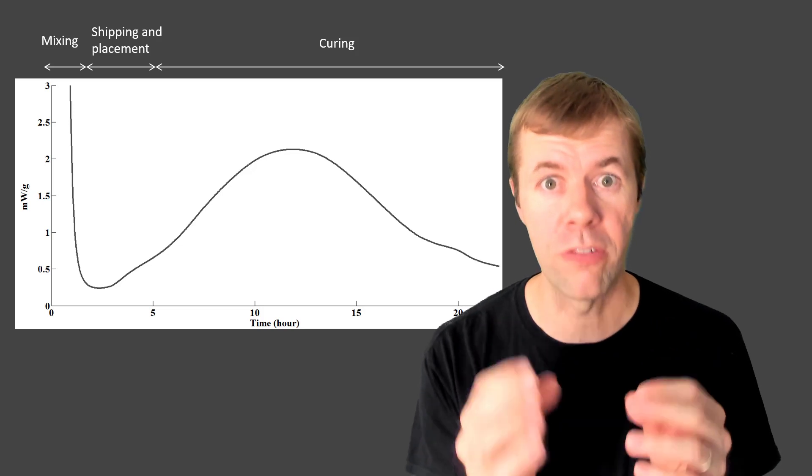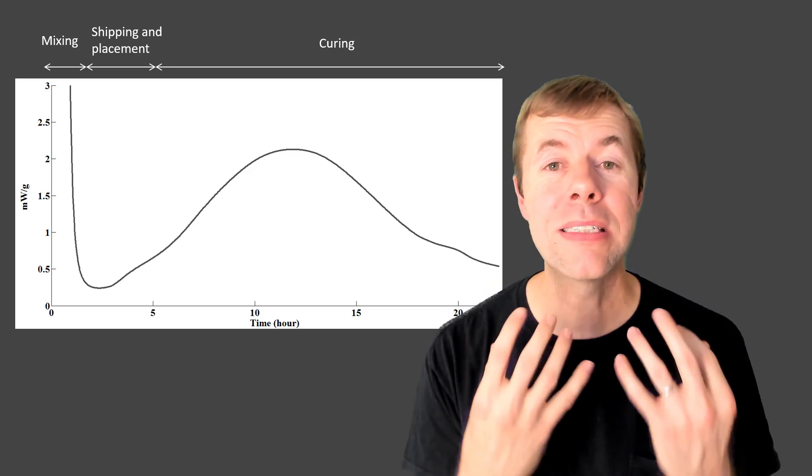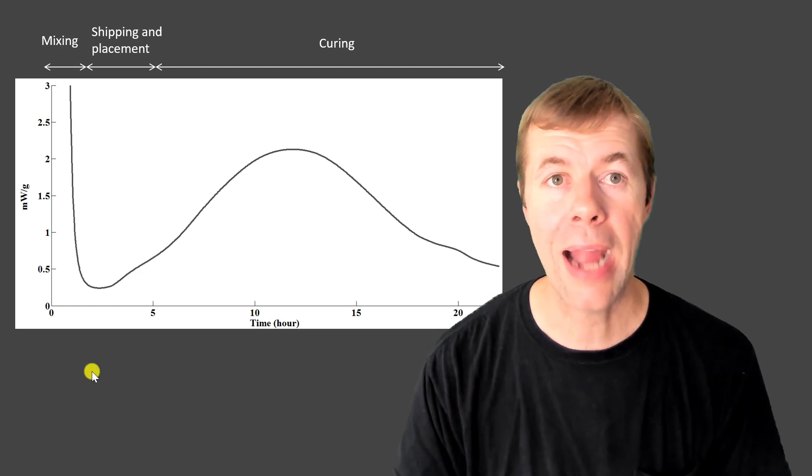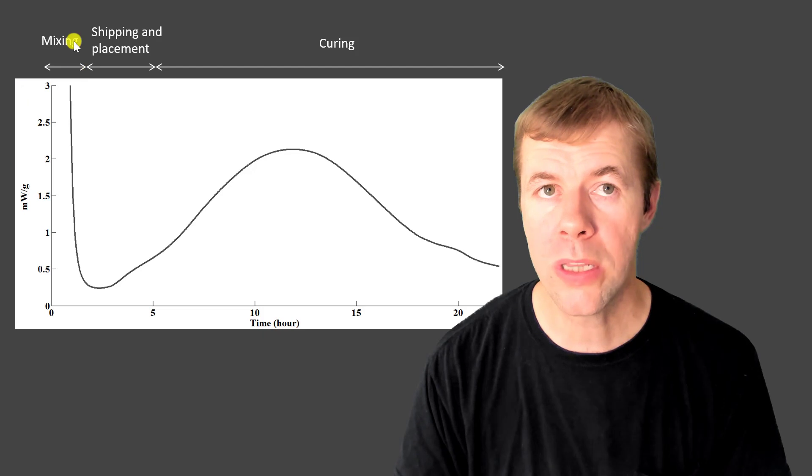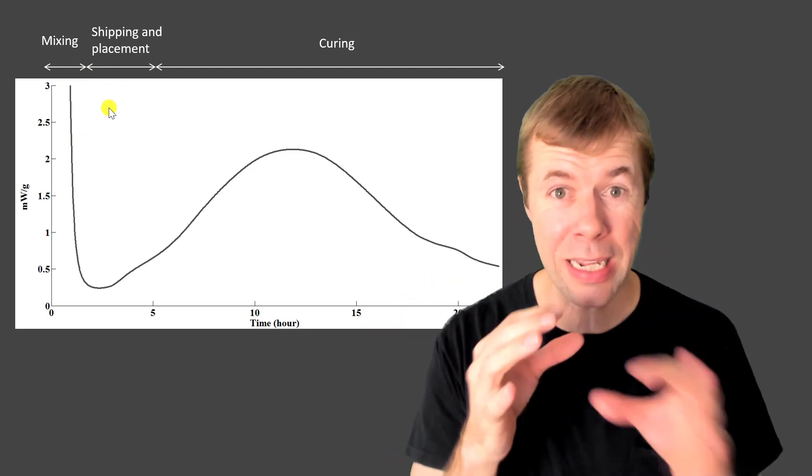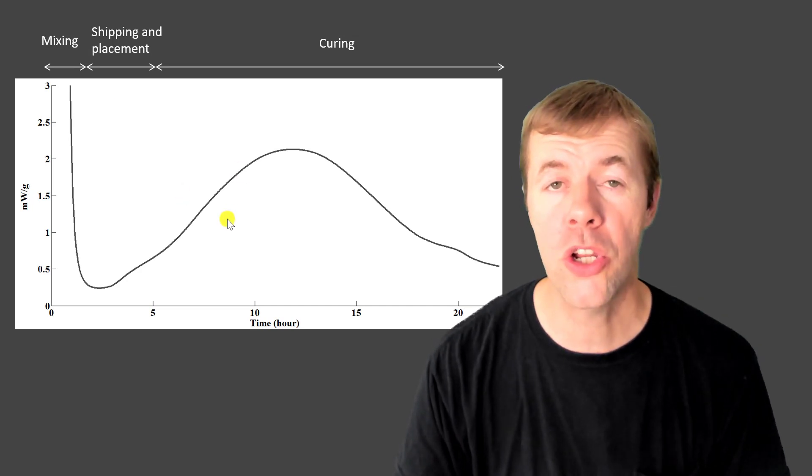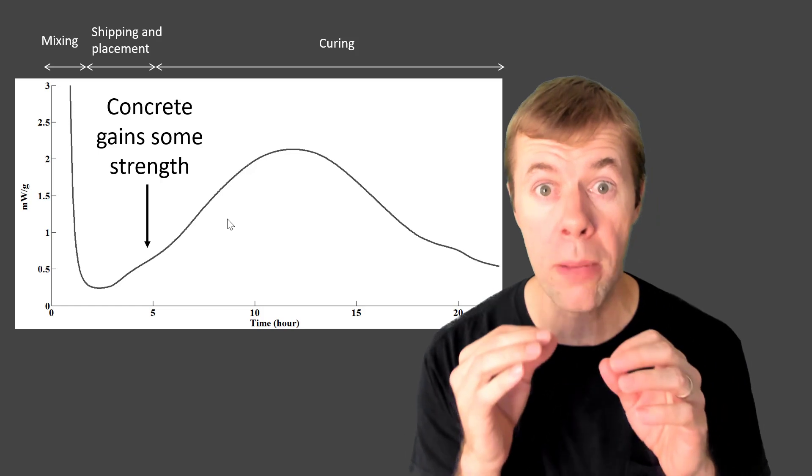Calorimetry curve. That is the heat release that happens when cement and water react. This is the amount of heat that is given off and here is time. And here we're showing this is when mixing happens. We usually ship the concrete from one place to another, place it and consolidate it. And this is when curing happens. And right about here is when the concrete gains in some strength.